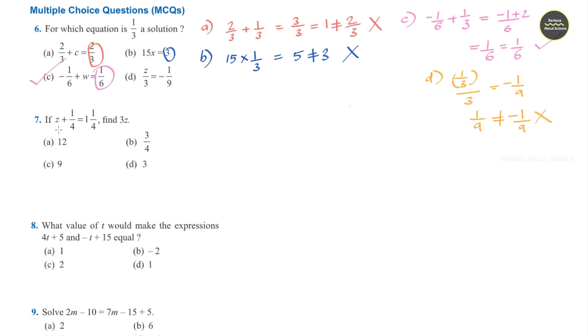Question number 7. If z plus 1/4 is equal to 1 and 1/4, we need to find 3z. We can write the given equation z plus 1/4 is equal to 1 and 1/4. 1 and 1/4 is a mixed fraction, so reducing it becomes 5/4. Now I can take this 1/4 to the other side, that is z is equal to 5/4 minus 1/4.